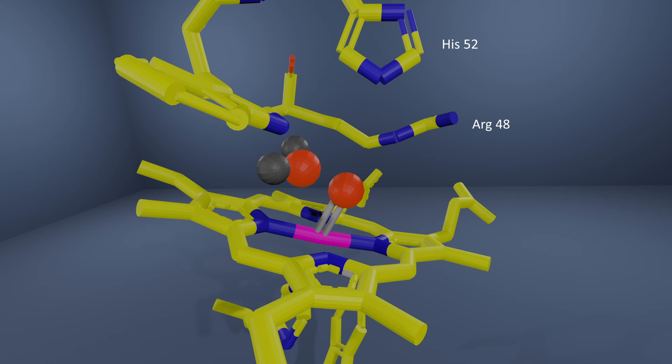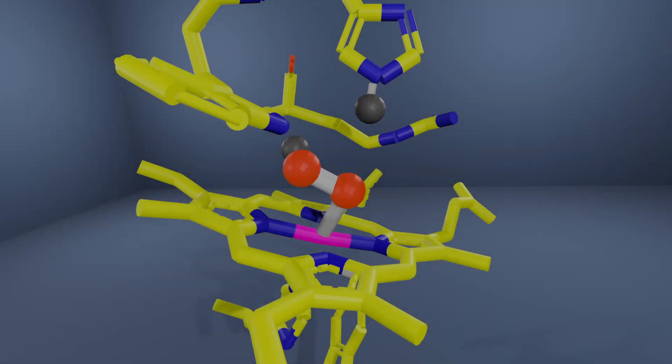It is thought that the distal histidine residue in the peroxidase active site is the base that deprotonates the peroxide in the formation of compound zero. This proton is then delivered by the imidazole to the terminal oxygen of the ferric hydroperoxide complex, catalyzing the O-O bond cleavage that produces compound one.